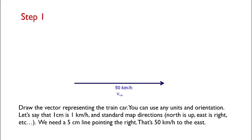Start by drawing out one of the vectors. We'll need to pick a scale. I selected that one centimeter will be one kilometer per hour, and we need to pick orientations. I suggest using standard map directions. In other words, north is up, east is right, west is to the left, and south is below.